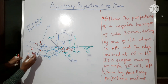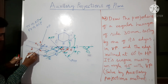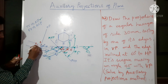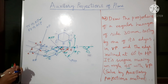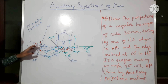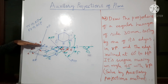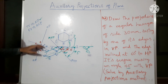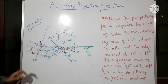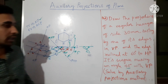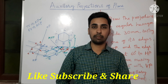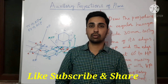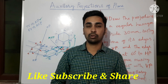Join all the points with a straight scale: A to B, B to C, D to E, F, and back to A. This gives the hexagon with the edge in the VP, surface making 45 degrees with VP, and the resting edge making 60 degrees with HP. This is how you draw auxiliary projections of planes. Solve step by step — don't do it all at once.